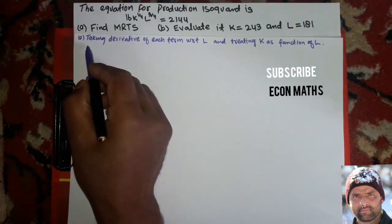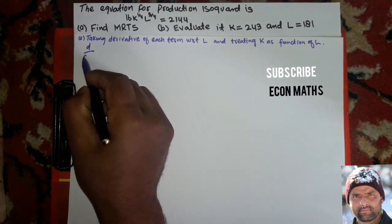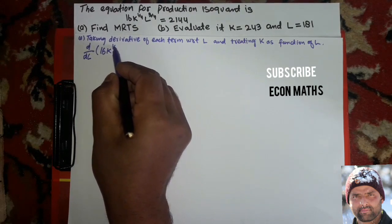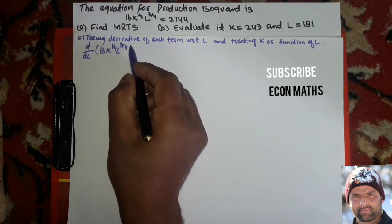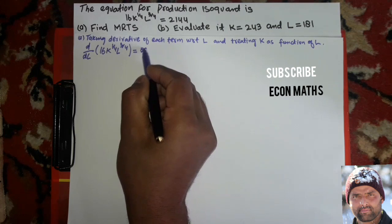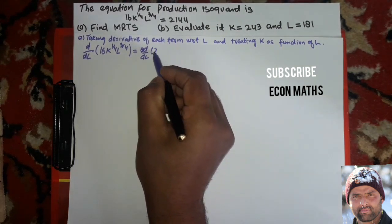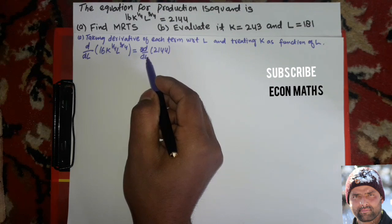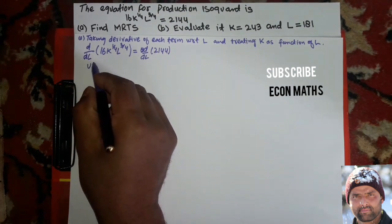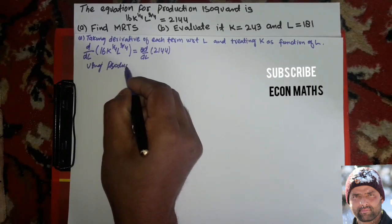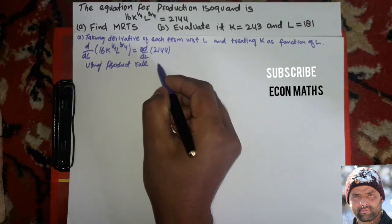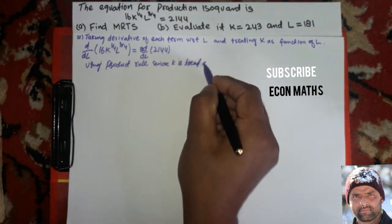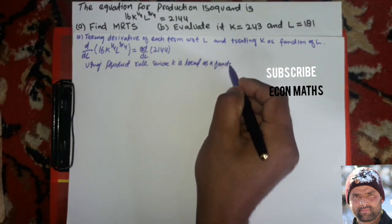Now, how will we do this? We will write d/dL of 16 k to the power 1/4 times L to the power 3/4 equals d/dL of 2,144. We are differentiating this whole function with respect to L, and we will use the product rule since k is treated as a function of L.